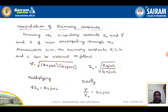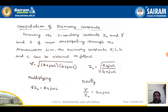Z₀ is the characteristic impedance and gamma is the propagation constant. Z₀ equals the square root of Z divided by Y, and gamma equals the square root of Z times Y, where Z equals R + jωL and Y equals G + jωC. Multiplying gamma by Z₀, the G + jωC terms cancel, leaving R + jωL. Dividing gamma by Z₀, the R + jωL terms cancel, leaving G + jωC.